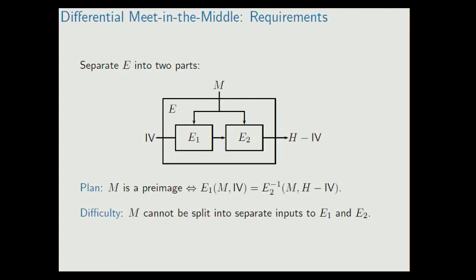And the idea is to separate this block cipher E into two parts, E1 and E2, and then to check whether M, just a randomly chosen message, is a pre-image by computing E1 in the forward direction, E2 in the backward direction, and just check whether we have a match here in the middle.